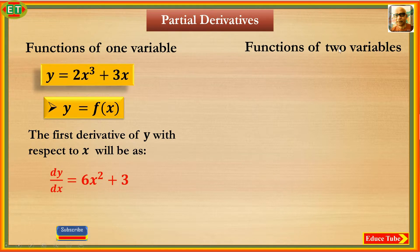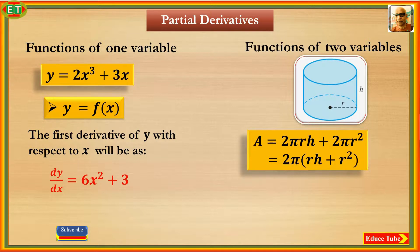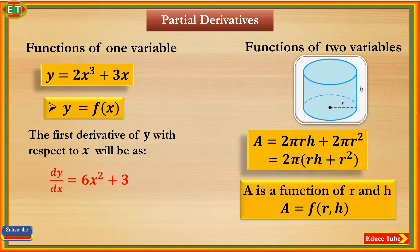But in the real world, physical quantities often depend on two or more variables. That's why, to understand clearly functions of two variables, I am taking this right circular cylinder having radius r and height h. To find the total surface area A of this right circular cylinder, we write A equal to 2πrh plus 2πr squared. So we can write A equal to function of r and h.